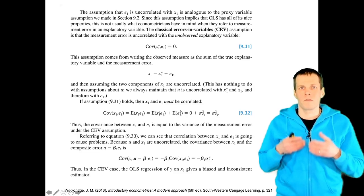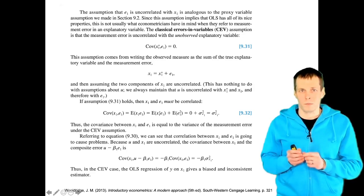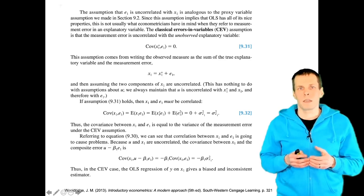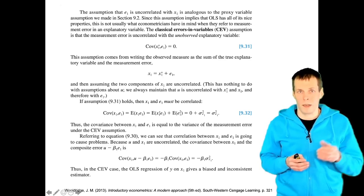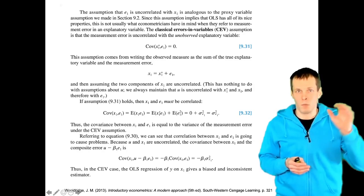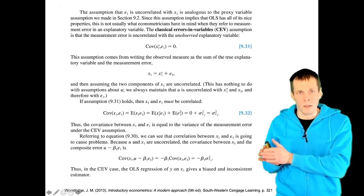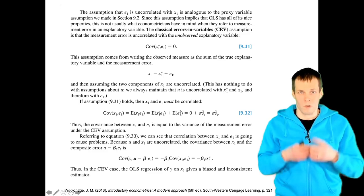The key assumption in errors in variables regression analysis is so-called classical errors in variables. What this means is that the measurement error in the variables is uncorrelated with the variables themselves. So if we have a B that we're interested in, then the indicator B1, the error in B1 is uncorrelated with B that is of our interest.